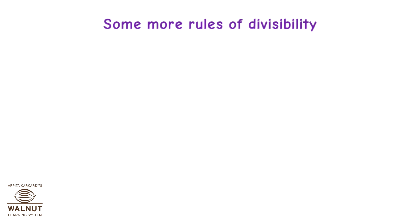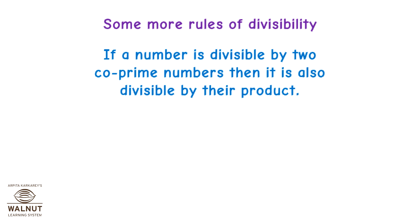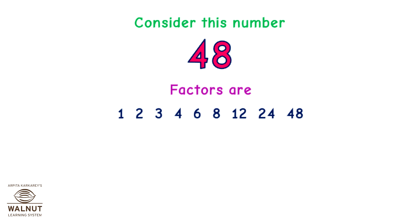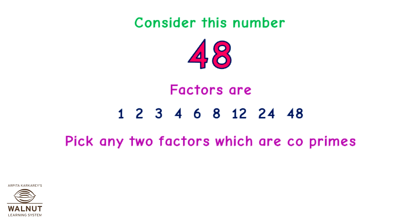Some more rules of divisibility: if a number is divisible by 2 co-prime numbers, then it is also divisible by their product. Let's see how that works. Consider the number 48. Its factors are 1, 2, 3, 4, 6, 8, 12, 24, 48. Pick any two factors which are co-primes — for example, 3 and 8.